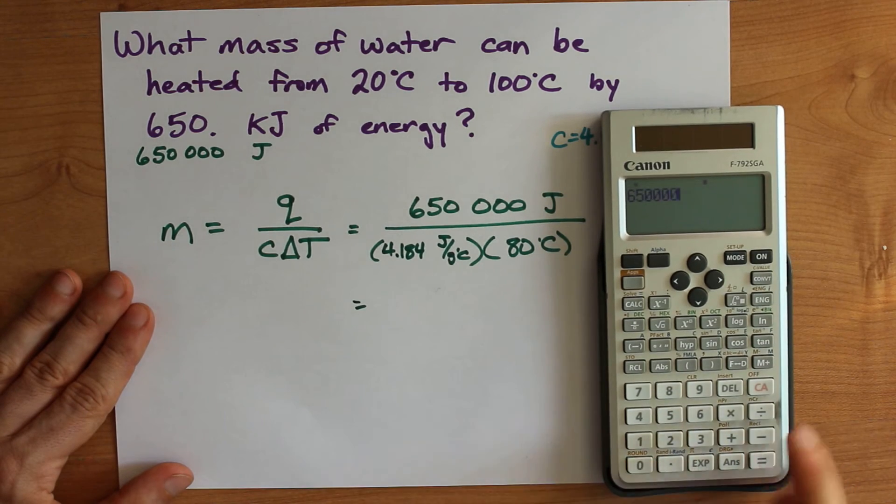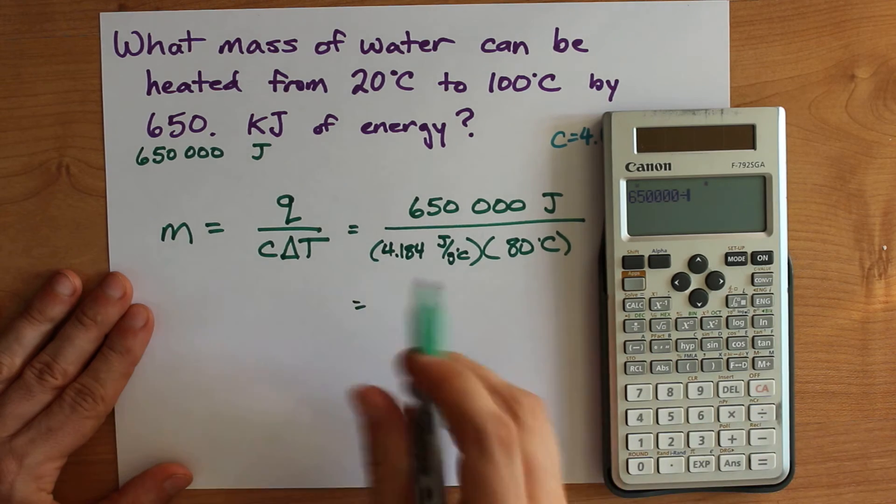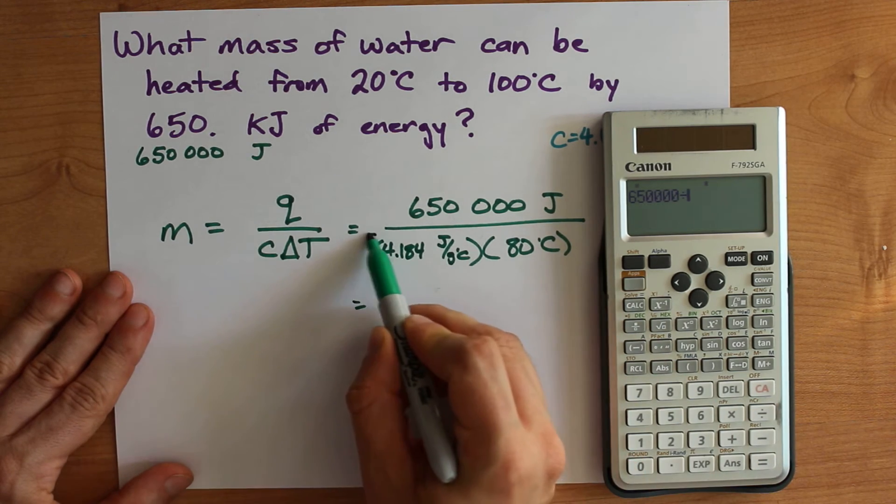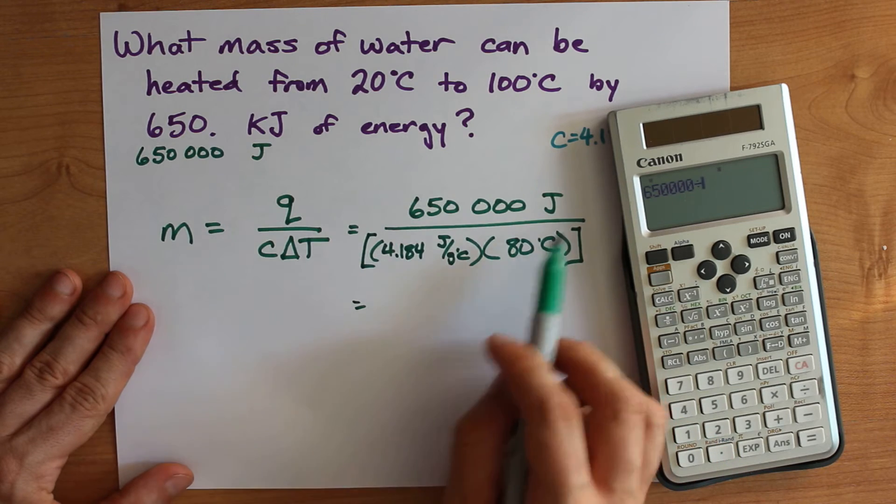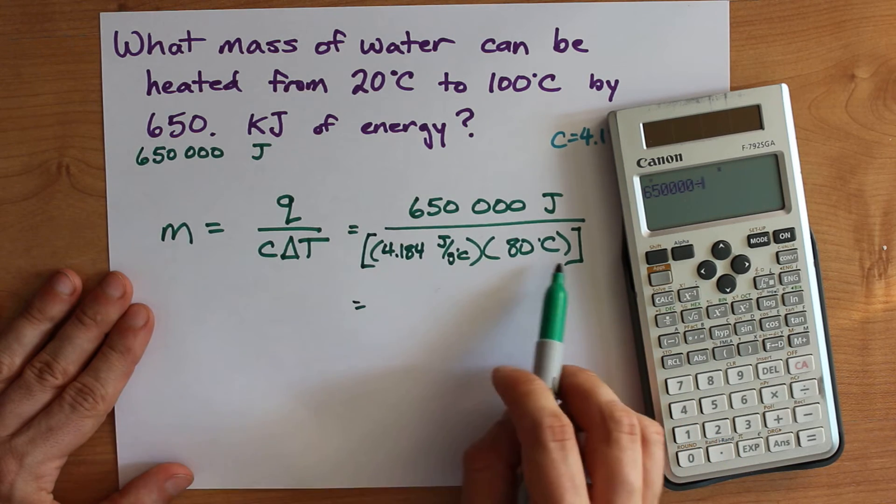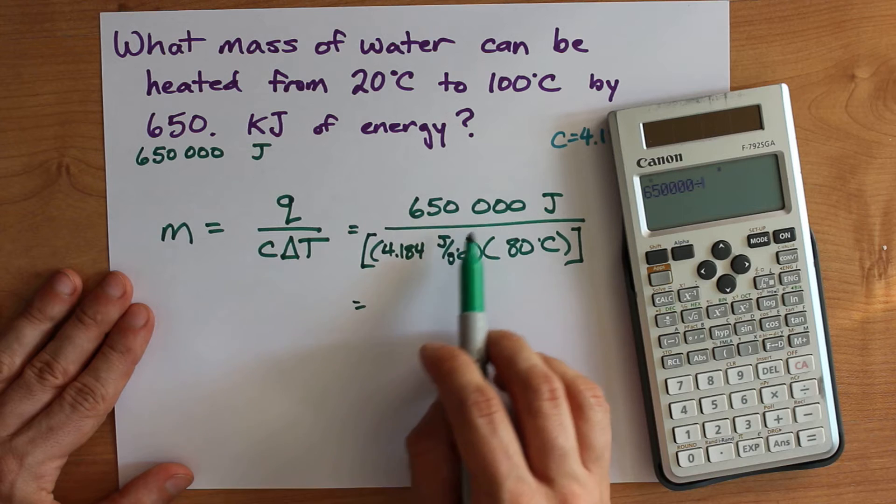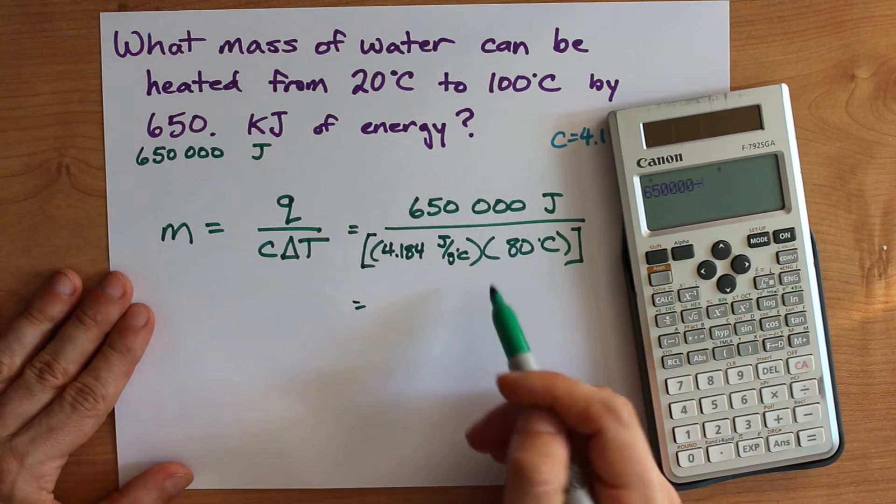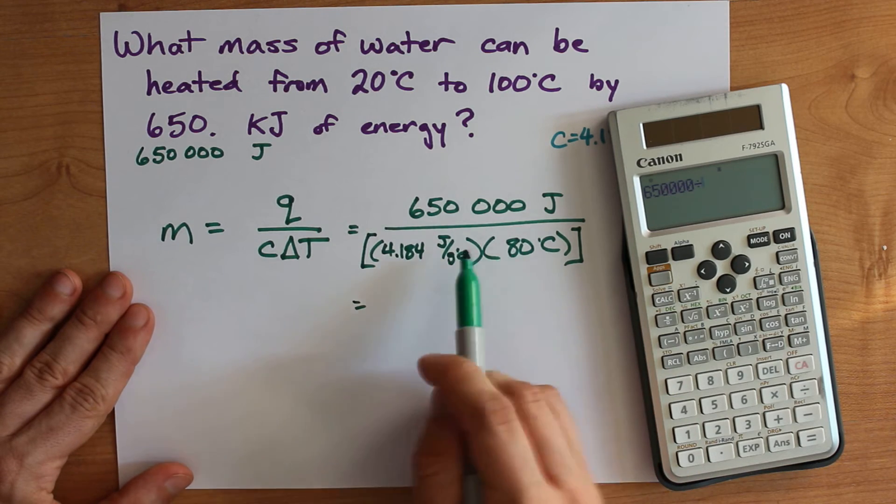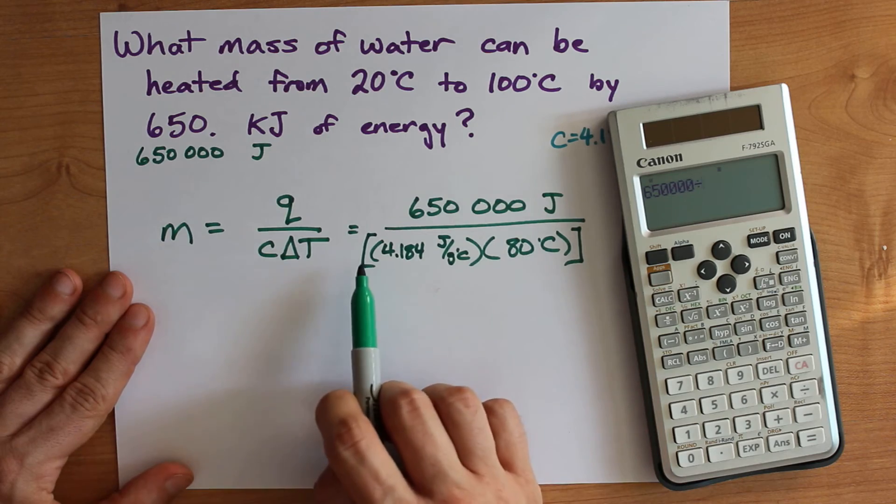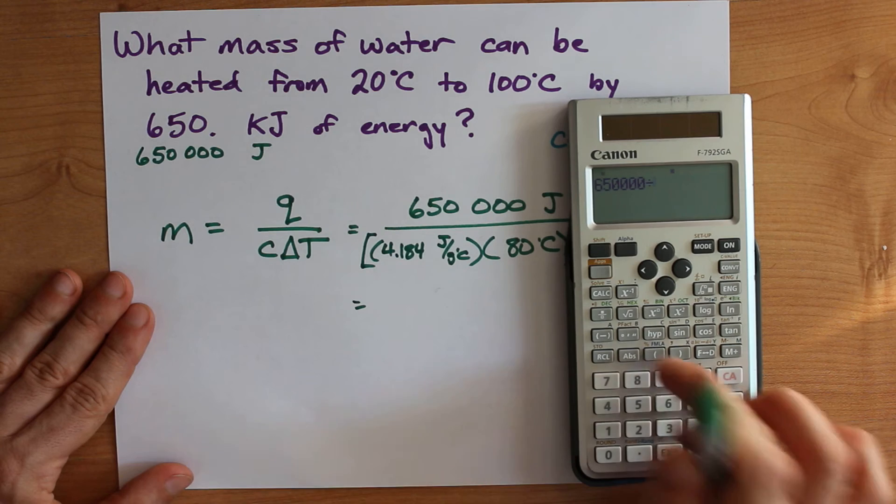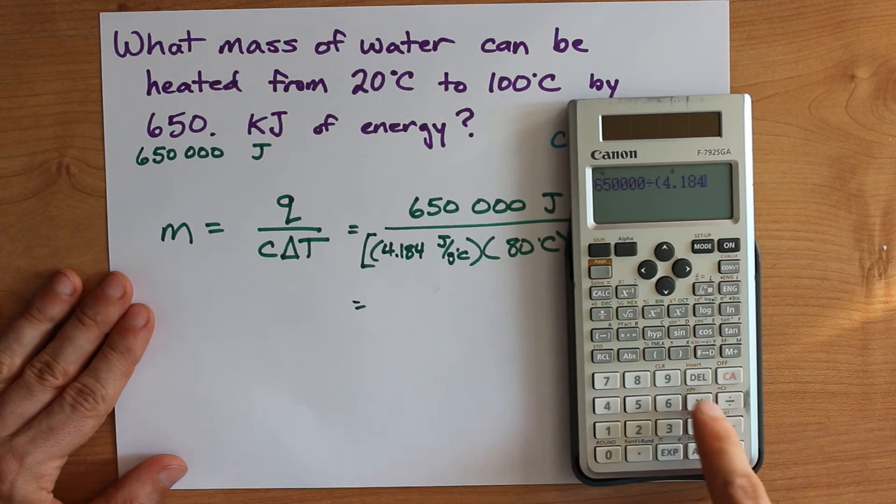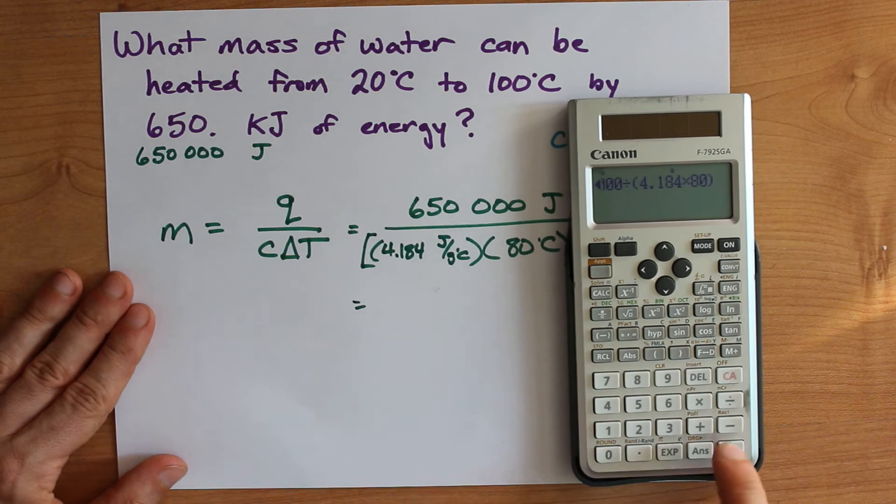650,000 divided by — now, when you're typing this into the calculator, you need to put brackets around the whole denominator. You have to say it's divided by this whole product instead of just this divided by this times this. The calculator will do this division before it does this multiplication if you don't add these brackets in there. So it's open bracket 4.184 times 80, closed bracket.